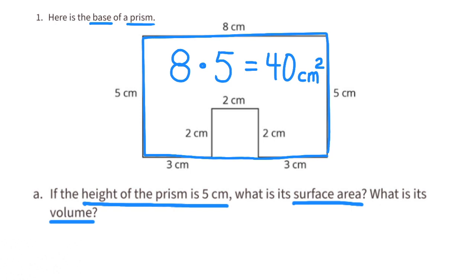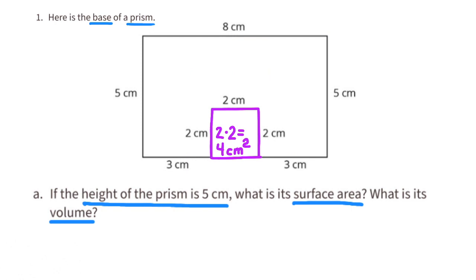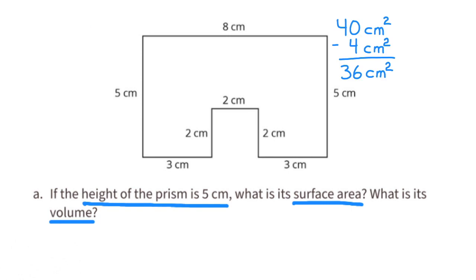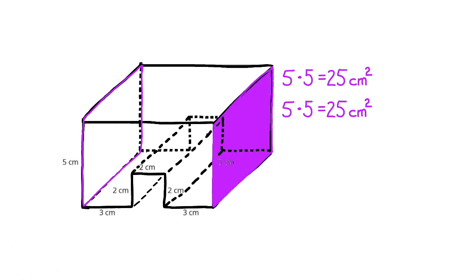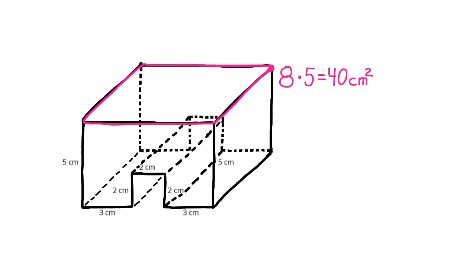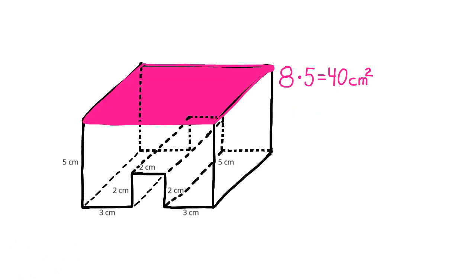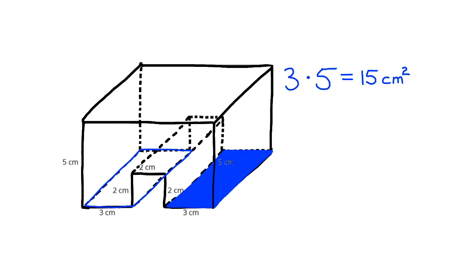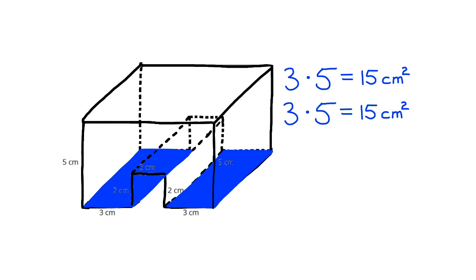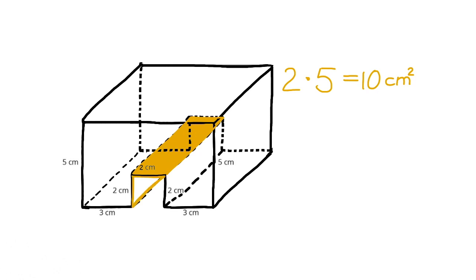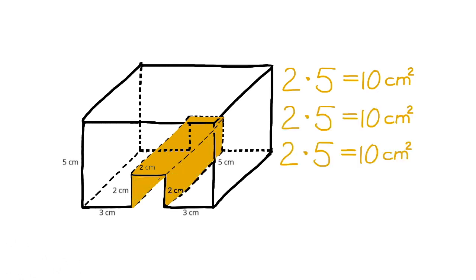Next, we need to subtract this small section that's 2 by 2. 2 times 2 is 4 centimeters squared. So 40 minus 4 gives us 36 centimeters squared for each of the two bases. For these two sides, the area would be 5 times 5, or 25 centimeters squared. The area of this side would be 8 times 5, or 40 centimeters squared. The area for these two sides would be 3 times 5, or 15 centimeters squared. The surface area for these three sides would be 2 times 5, or 10 centimeters squared.